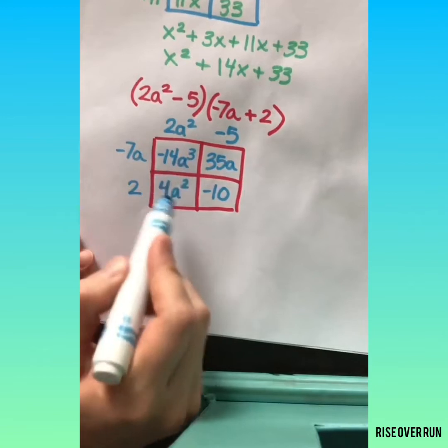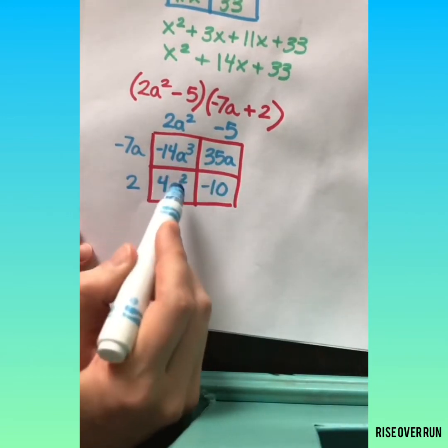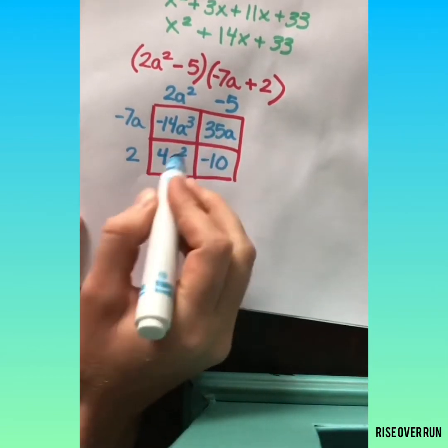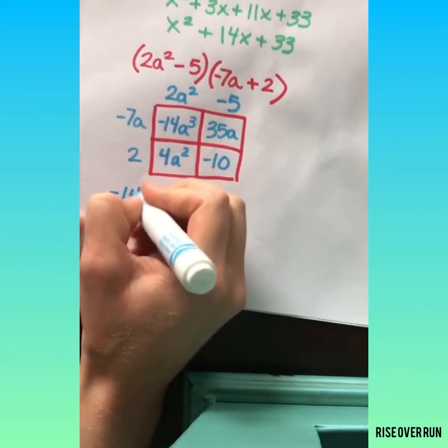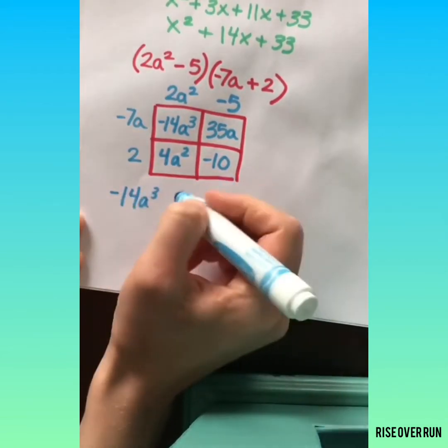Let's go ahead and look for like terms. In this case, there aren't any. So we want to be sure we write this in standard form starting with our highest degree or largest exponent. Negative 14a cubed plus 4a squared plus 35a minus 10.